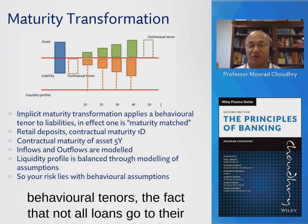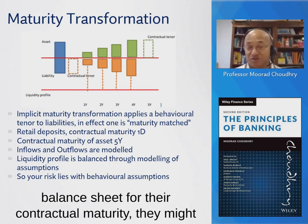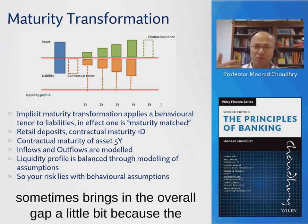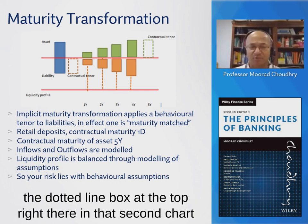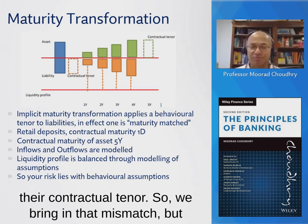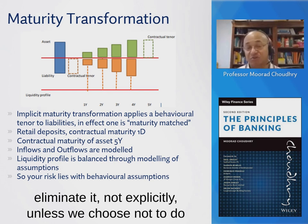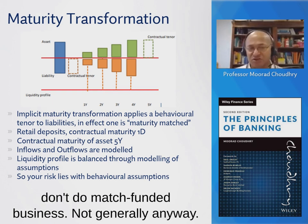When we consider behavioral tenors — the fact that not all loans go to their full term, they repay early, and not all deposits stay on the balance sheet for their contractual maturity, they might stay a lot longer — we have a behavioral mismatch, which sometimes brings in the overall gap a little bit. The behavioral life of loans might be less than contractual, hence the dotted line box at the top right in that second chart. And the behavioral life of deposits could be longer than their contractual tenor, so we bring in that mismatch. Nevertheless, the mismatch is still there. We can never eliminate it, unless we choose not to do maturity transformation — match-fund everything. But of course, that's no longer what banks are here to do. Banks don't do match-funded business, not generally anyway.